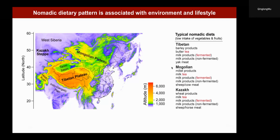The high altitude environment is quite different, which causes a very different format of agricultural production, resulting in distinct dietary patterns in nomadic populations. They have very low intake of vegetables and fruit, but rather a strong preference for tea and fermented milk products.